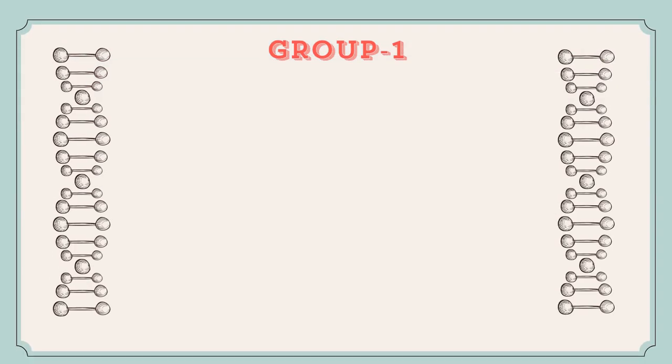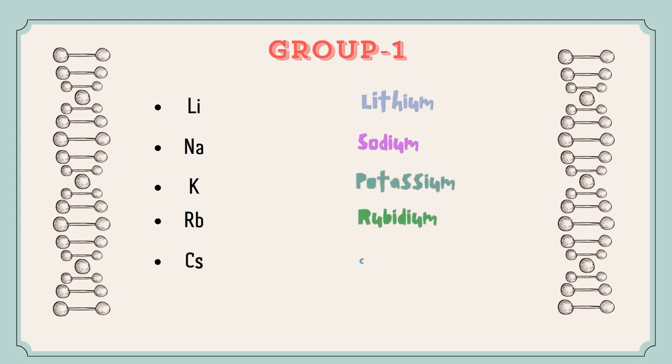So the elements of group 1 are lithium, sodium, potassium, rubidium, cesium, and francium.